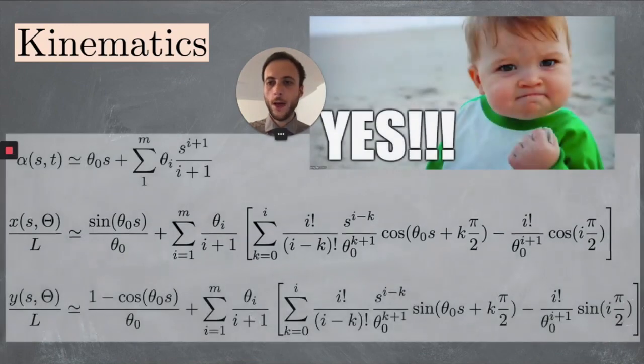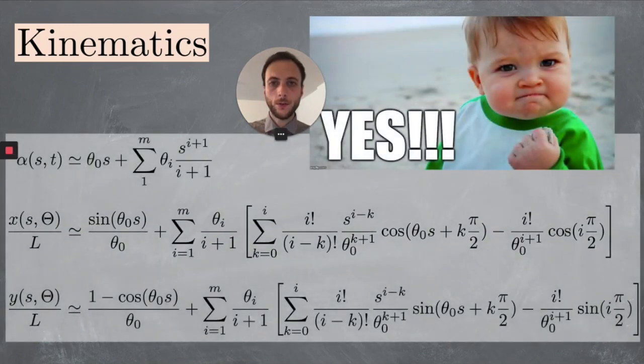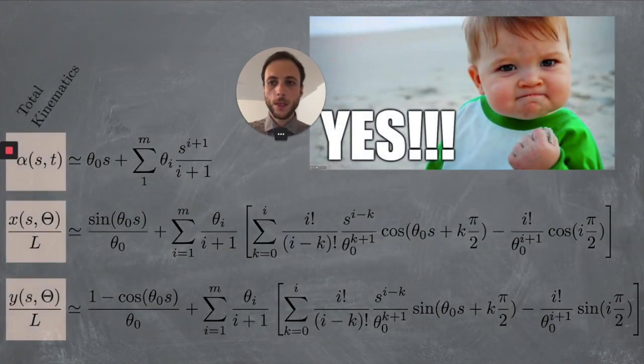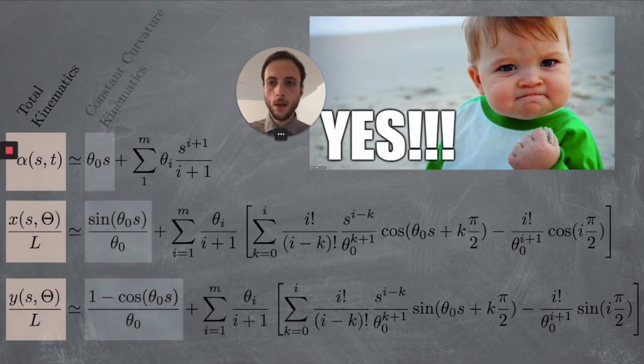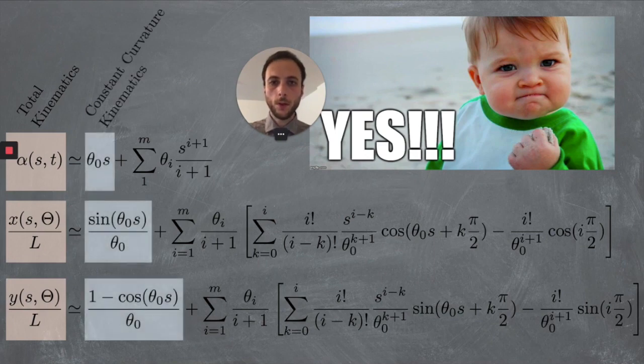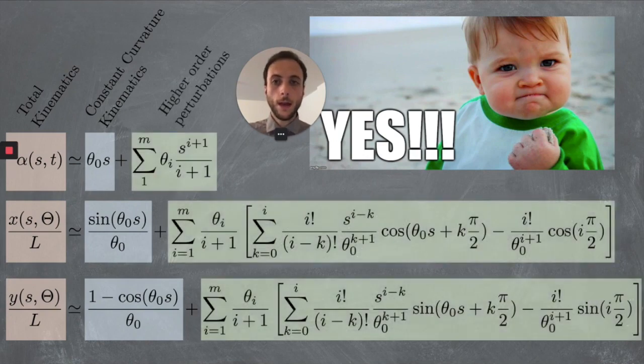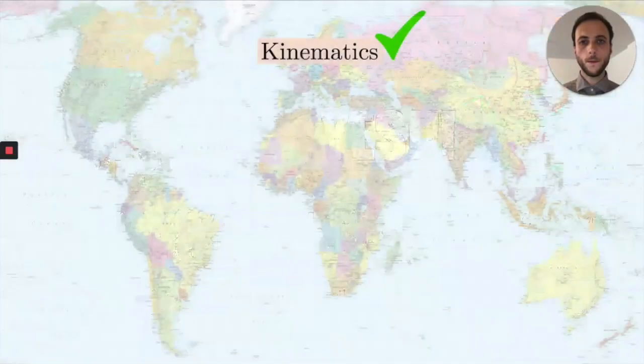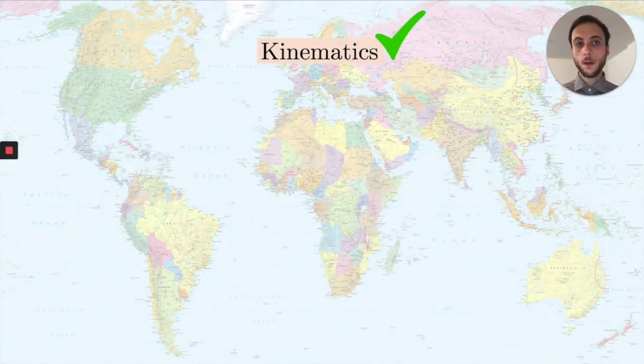So, putting everything together, we have a complete description of the robot kinematics. More specifically, we have here the posture of each point along the robot for all times t. The first term of all these elements is what we expect to find in a constant curvature model, and then we have all the higher-order perturbations. So, the kinematics is done.